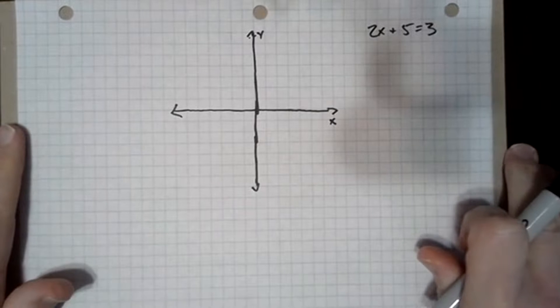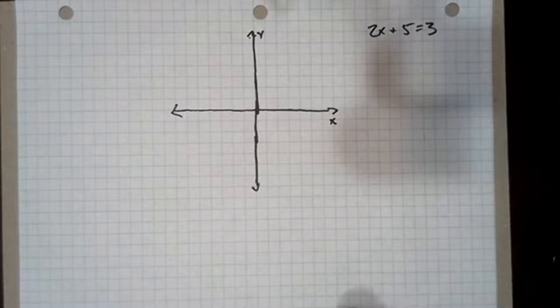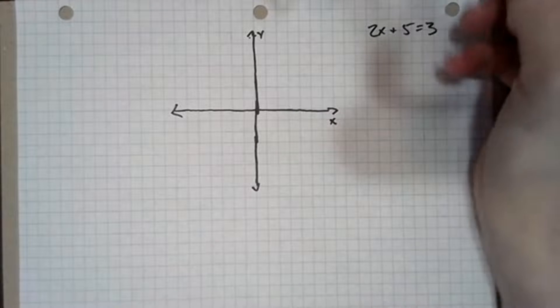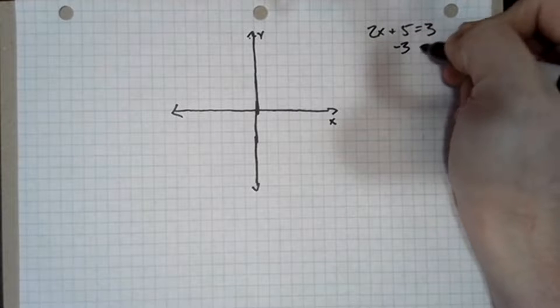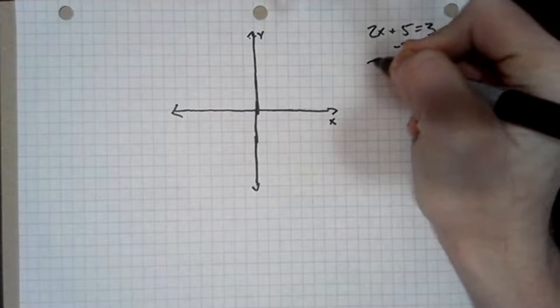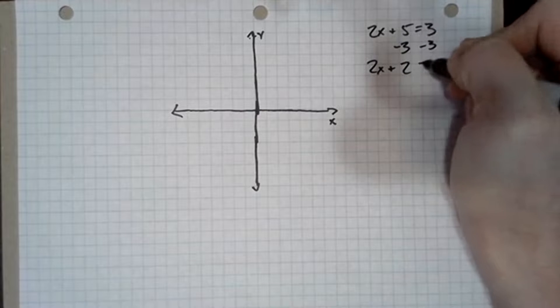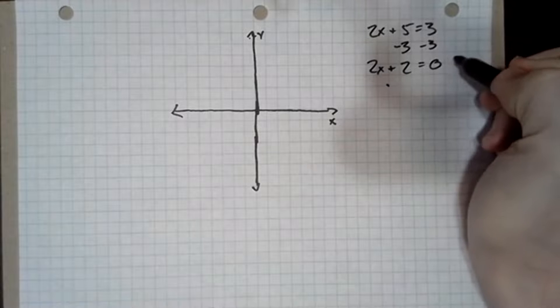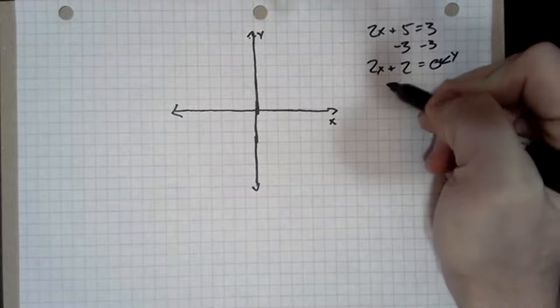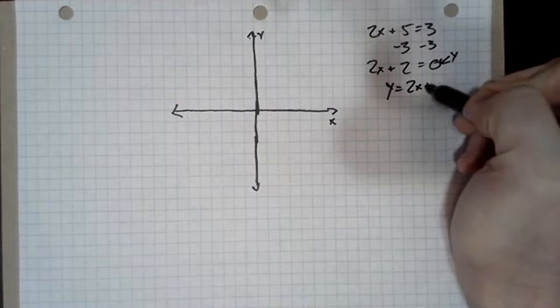We start by changing this equation into a function. We're going to do that by first subtracting 3 from both sides of the equation, which gives us 2x plus 2 equals 0, and then we're going to make y the 0. So y equals 2x plus 2.